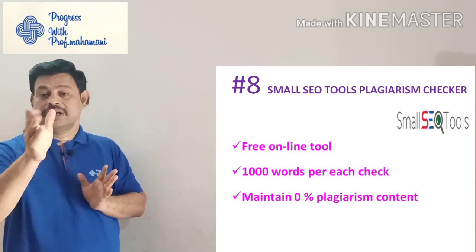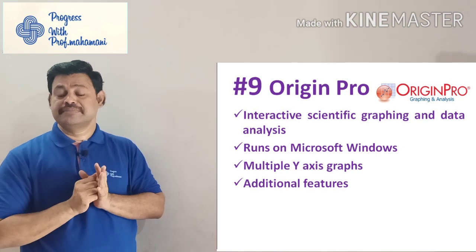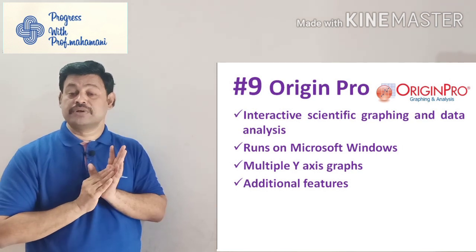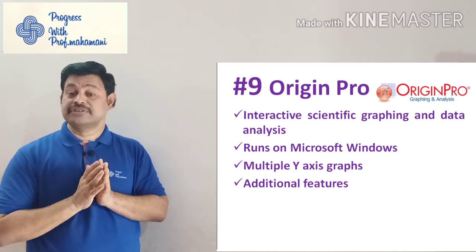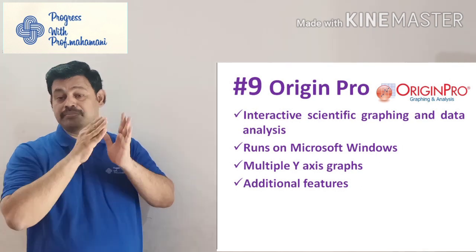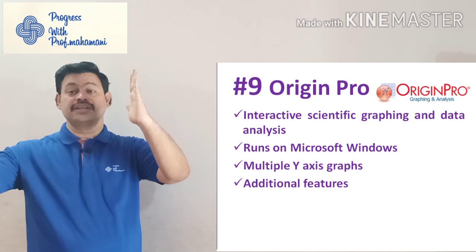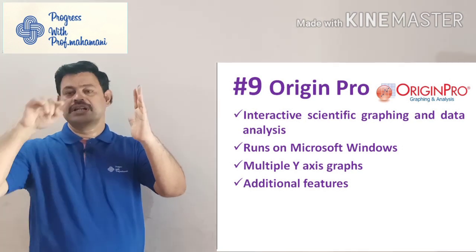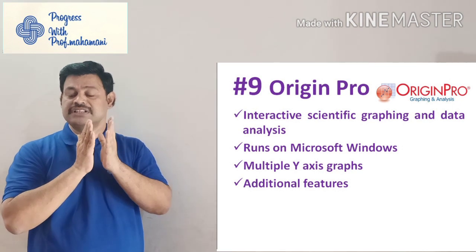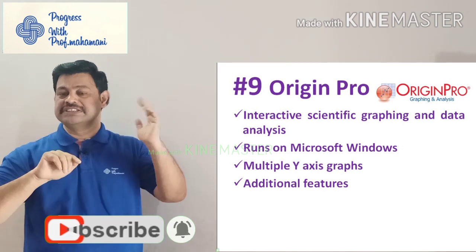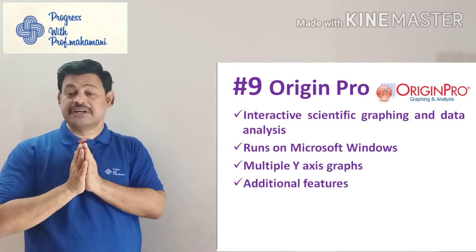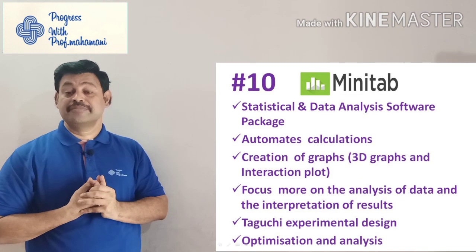The ninth one is OriginPro, a graphing and data analysis tool. Many research scholars use Excel sheets, but OriginPro has many advanced features. It is interactive graphing and data analysis software that runs on Microsoft Windows. You can create graphs in OriginPro and copy-paste them into your documents for comparison. Unlike Excel where all lines overlap making analysis difficult, OriginPro provides very good analysis with proper data scaling.